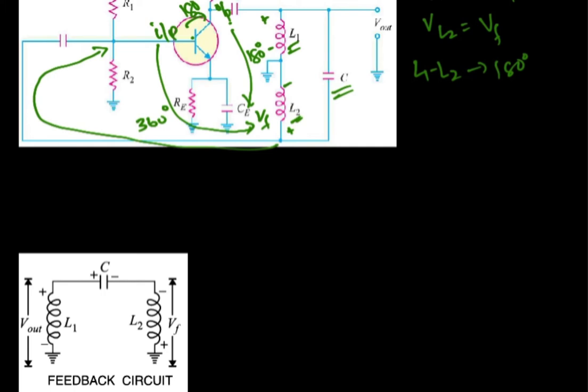The output is connected to the tank circuit, so a portion of the output voltage compensates the losses in the tank circuit. The requirement for producing sustained (undamped) oscillations is fulfilled by two conditions: the feedback voltage is in phase with the input at the base of the transistor, providing positive feedback, and the losses in the tank circuit are compensated by a fraction of the output voltage. This results in undamped oscillations in the output.